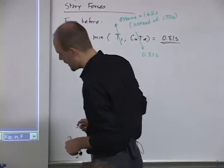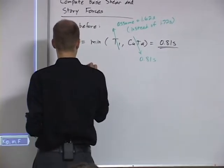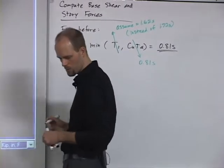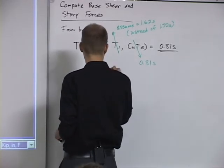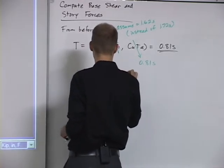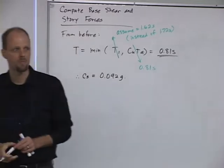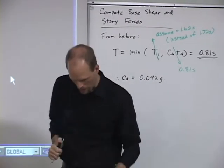So if we do that, we'll get our CS value to be 0.092 Gs, which is what we got before, right, in the last example that we did.